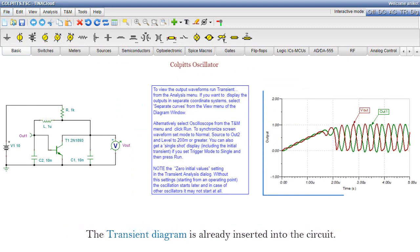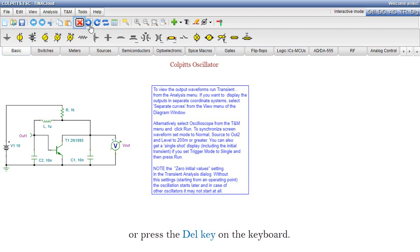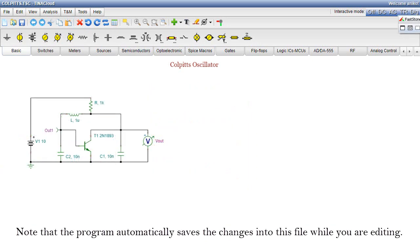The transient diagram is already inserted into the circuit. Delete it before simulation. To delete the diagram, first click the diagram and then click the red X icon on the toolbar or press the Delete key on the keyboard. Delete the additional text in the same way. Note that the program automatically saves the changes into this file while you are editing.